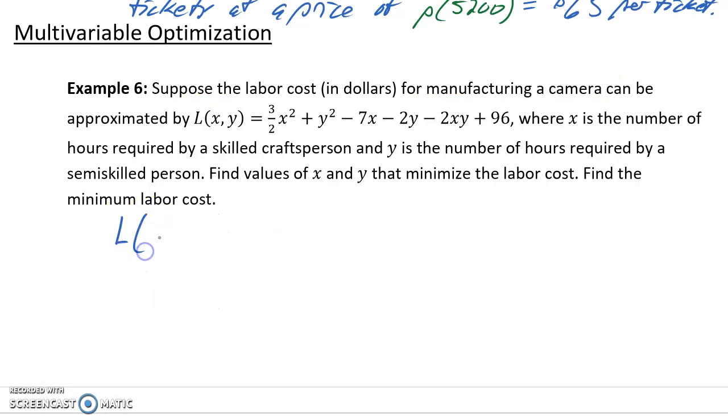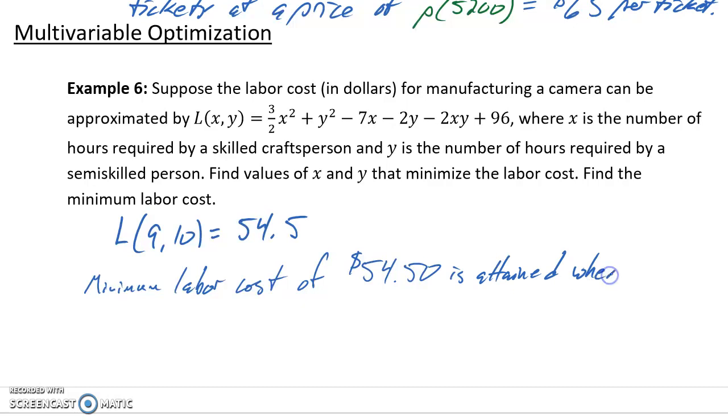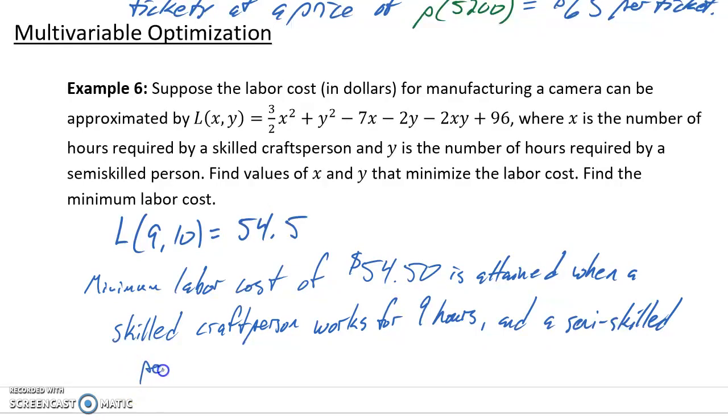This tells us that we'll have our minimum occurring at L(9,10) equal to 54.5, and if we wanted to write that in context, we would say that the minimum labor cost of $54.50 is attained when a skilled craftsperson works for 9 hours, and a semi-skilled person works for 10 hours.